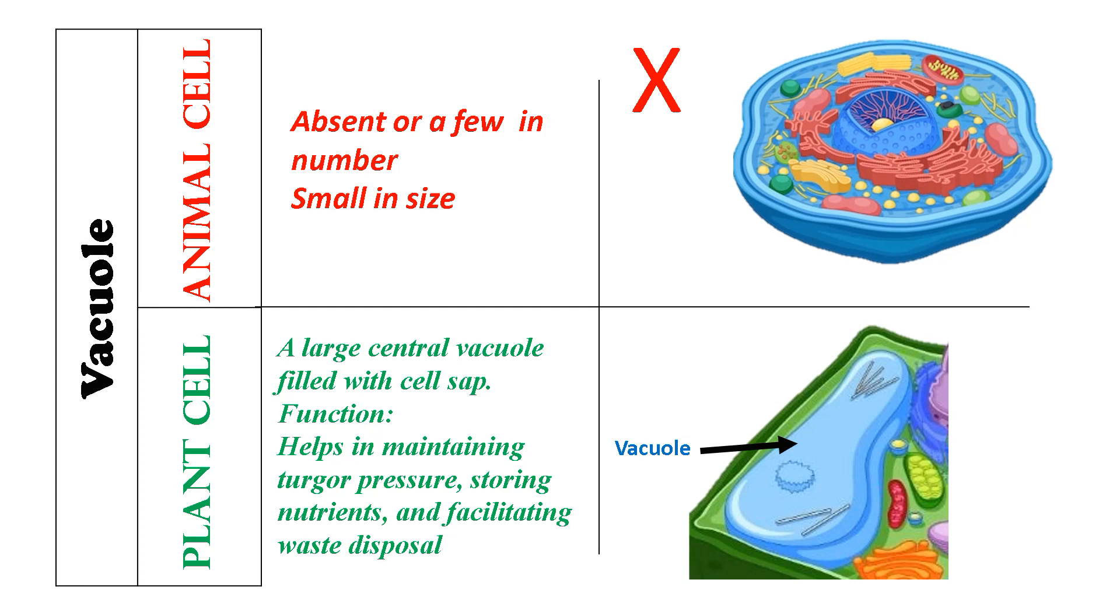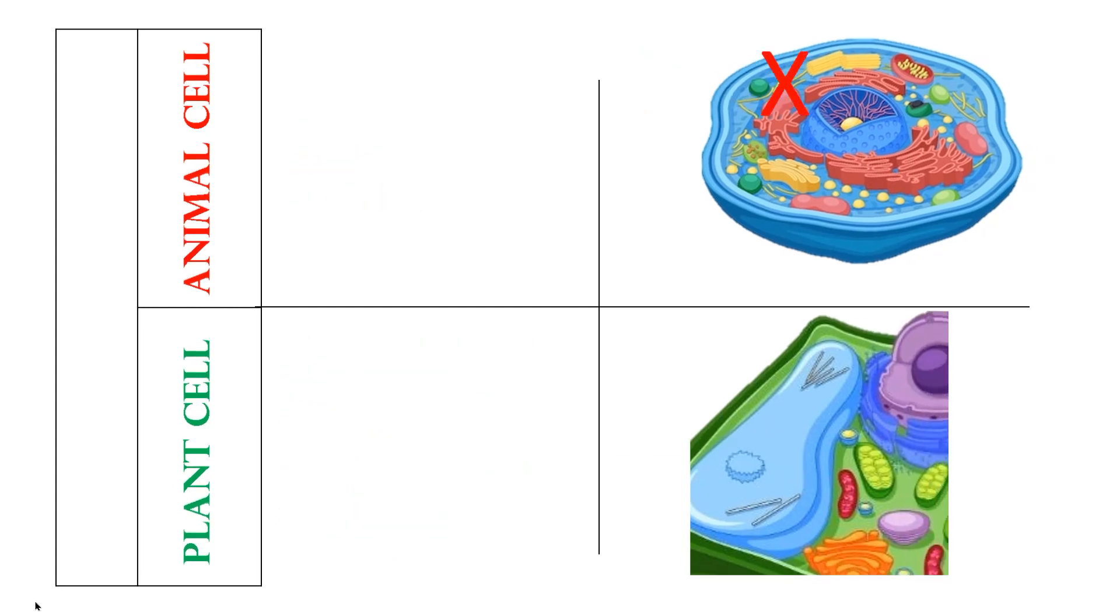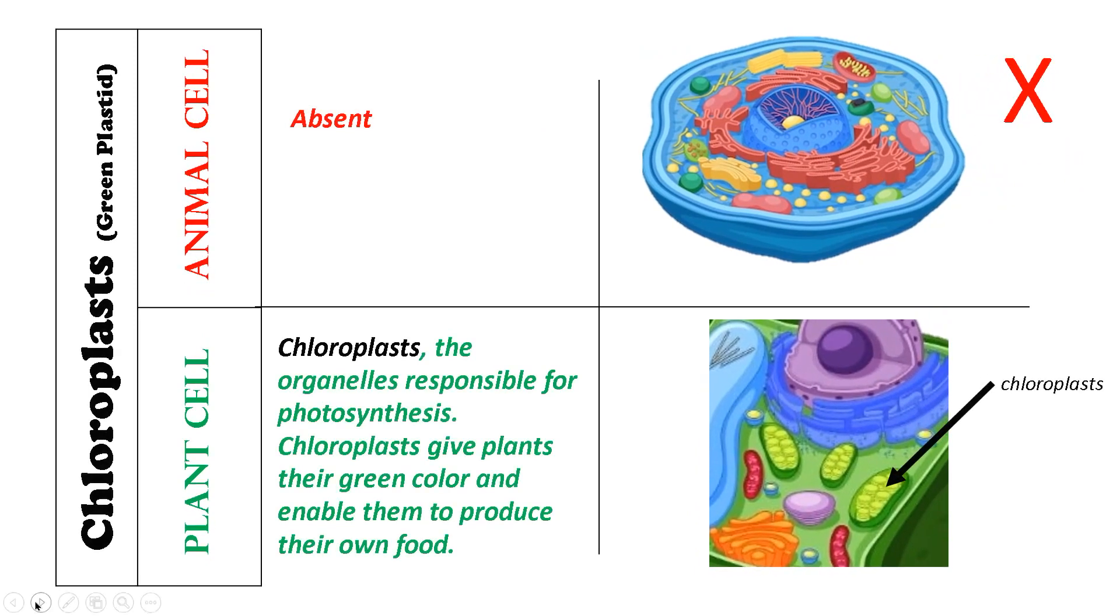The next parameter of difference is plastids. In case of animal cells, green colored plastids called chloroplasts are absent, whereas chloroplast is one of the major identifying features of plant cells.